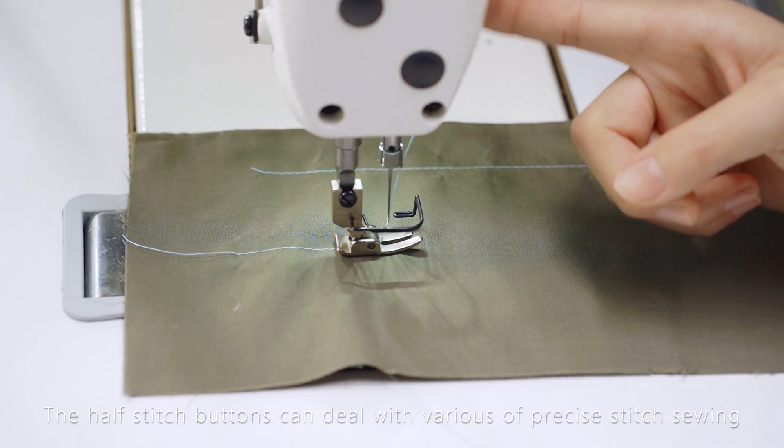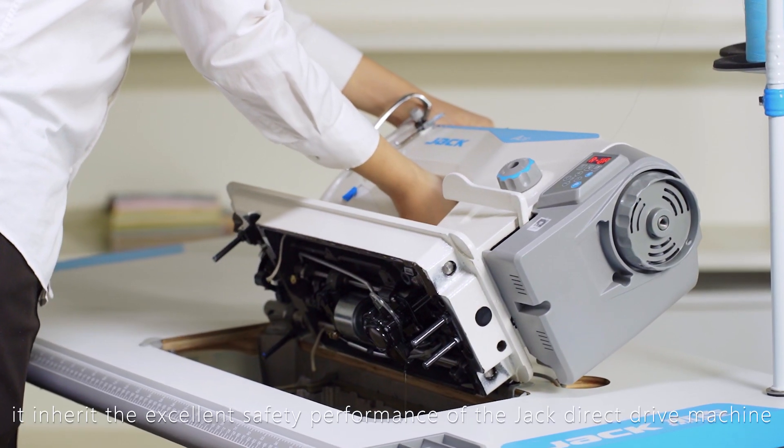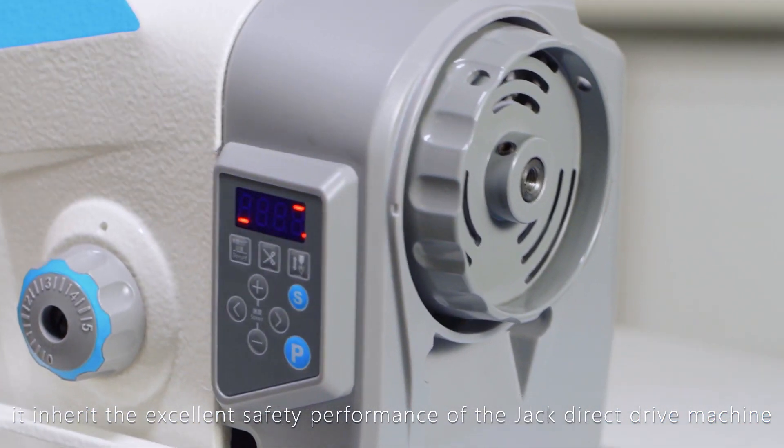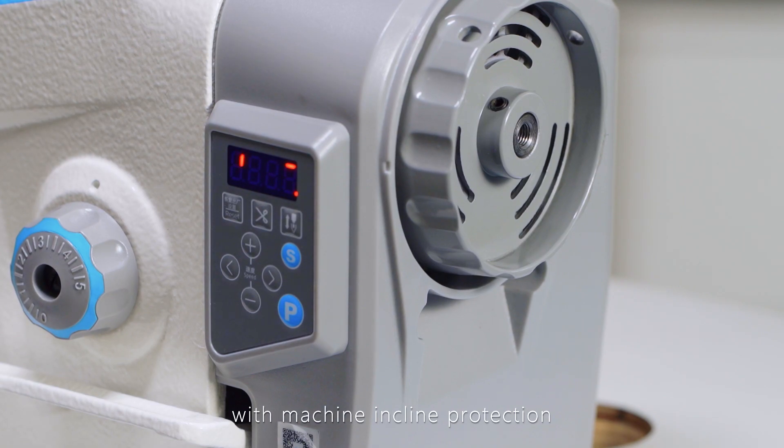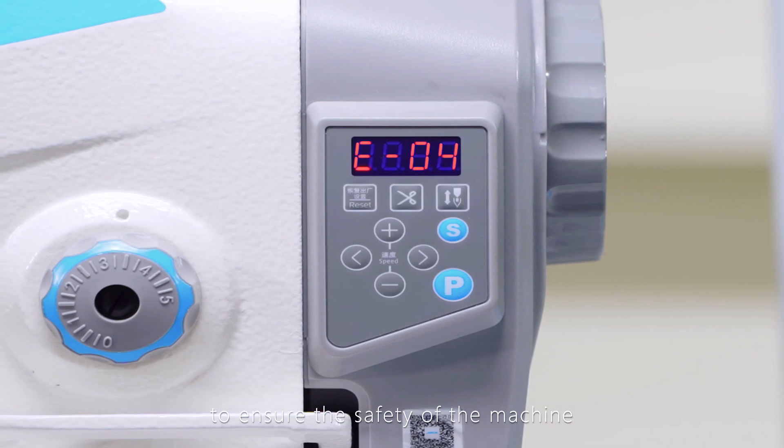The half stitch buttons can deal with various precise stitch sewing. At the same time, it inherits the excellent safety performance of the Jack Direct Drive Machine, with machine incline protection and high and low voltage protection functions to ensure machine safety.